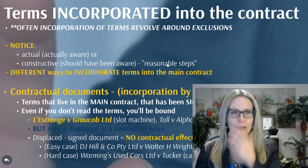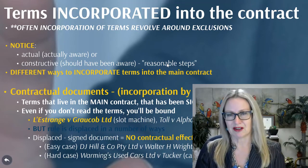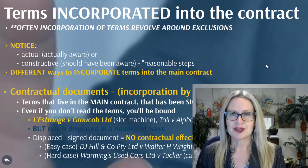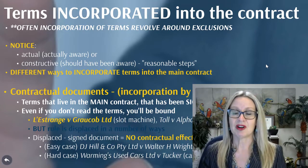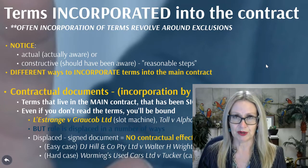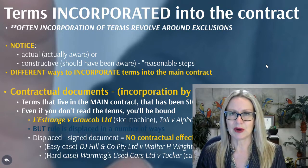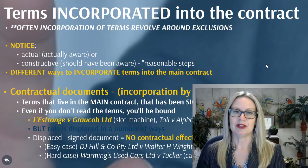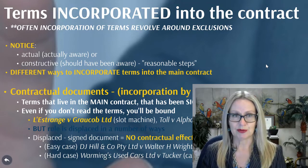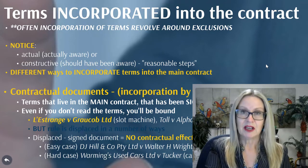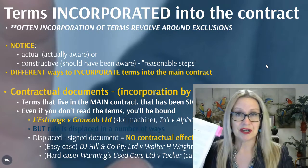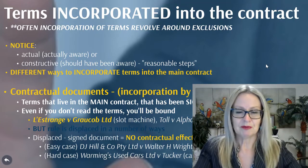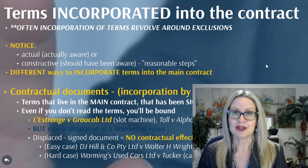There are a couple of things you need to know before we launch into discussions of the various different ways that you can incorporate terms into a contract. The first relates to notice. There are a couple of different kinds of notice you need to be aware of. The first is actual notice, and that is where the person is actually aware of the term, the representation, the statement, or whatever is purportedly incorporated into the contract.